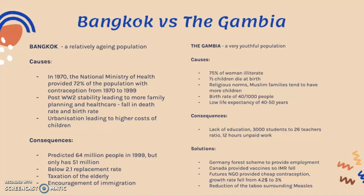The consequences of this include a lack of education due to the strain on schooling facilities, leading to a ratio of 3000 students to only 26 teachers. There have been cases of 12 hours of unpaid work for teachers in the Gambia.